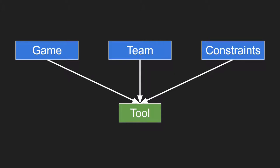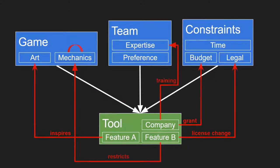It would be nice if it was as simple as defining the game, understanding the team and the constraints, and then just choosing the tool which fits. But in reality, you're going to have all kinds of feedback loops, and pretty much everything is going to change, at least somewhat, over time. So when trying to understand each of the factors that will influence your decision, make sure you have some slack in your definitions, because you'll want to favour tools which are robust to change. Some aspects are going to be very fundamental to your game and unlikely to change at all, and some aspects are going to be very loose for quite some time.